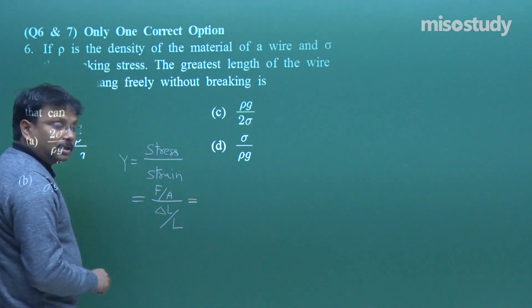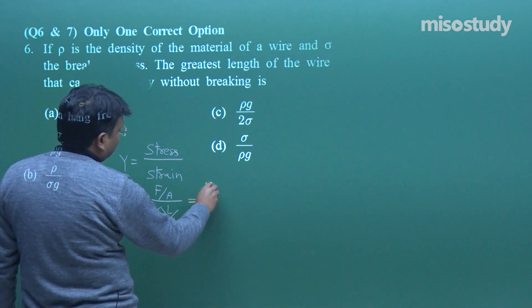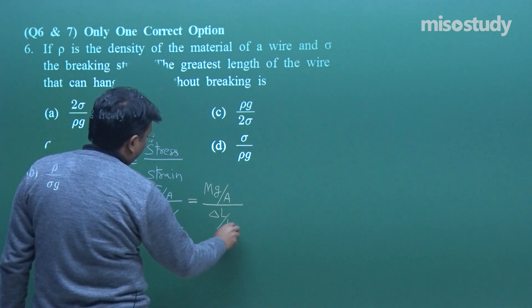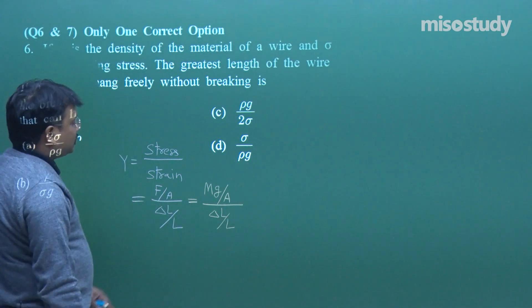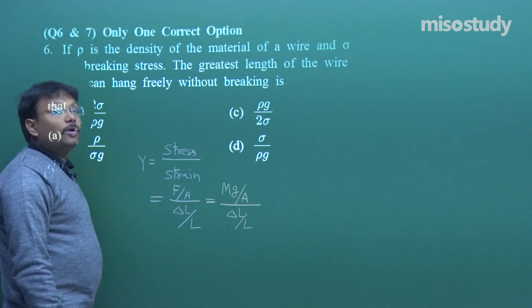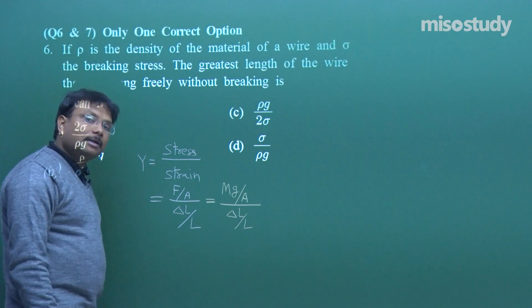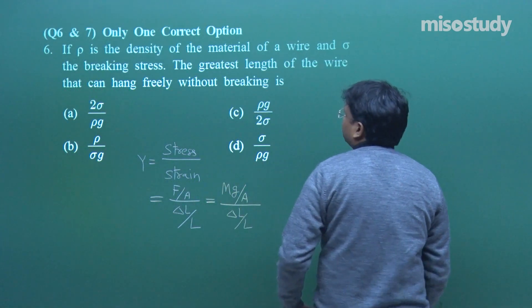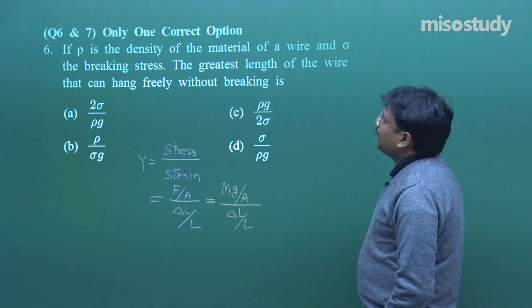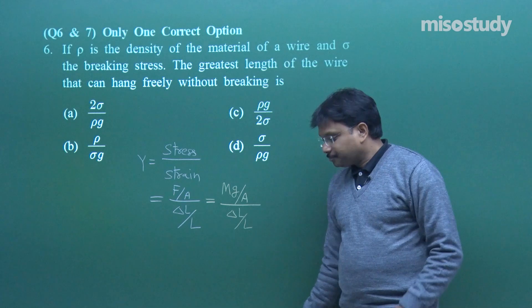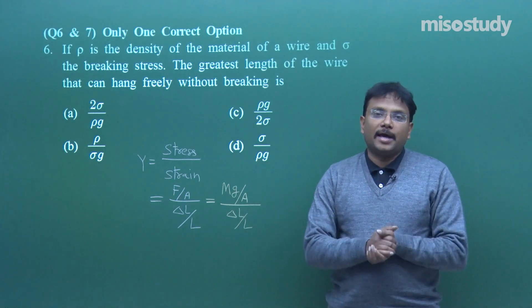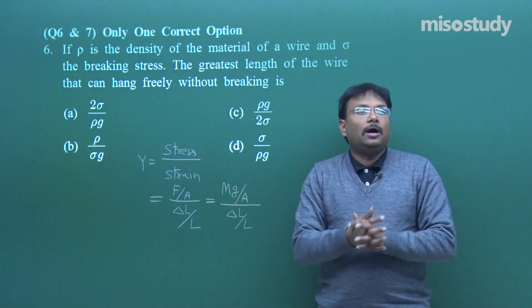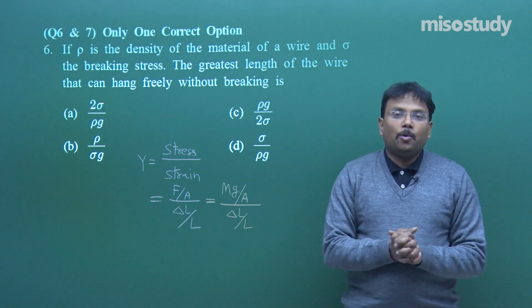Elaborating further, we write mg upon A, and logically thinking, upon L. Now, m we can also write in terms of density rather than in terms of m. So just those small changes have been made. The question asks: the greatest length of the wire that can hang freely without breaking.